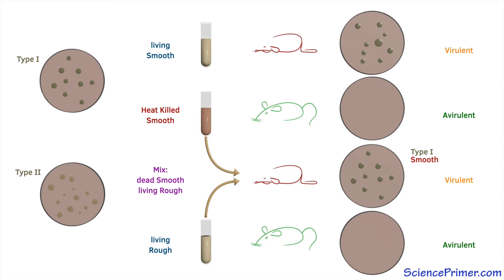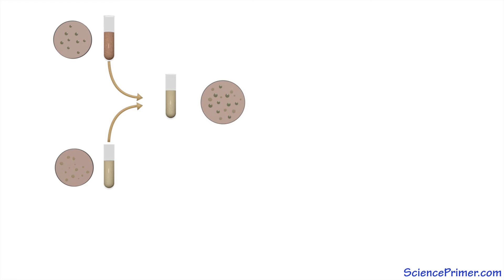Griffith's findings were quickly reproduced by a number of different researchers, leading to efforts to identify the transforming principle that must be present in the cell debris. While Griffith's initial approach to inducing transformation relied on passing the mixture through mice, it was not long before other researchers figured out how to achieve the same thing without mice, so that all that was needed was to mix heat-killed cell debris from one type with a living culture of a different type under the appropriate culture conditions.